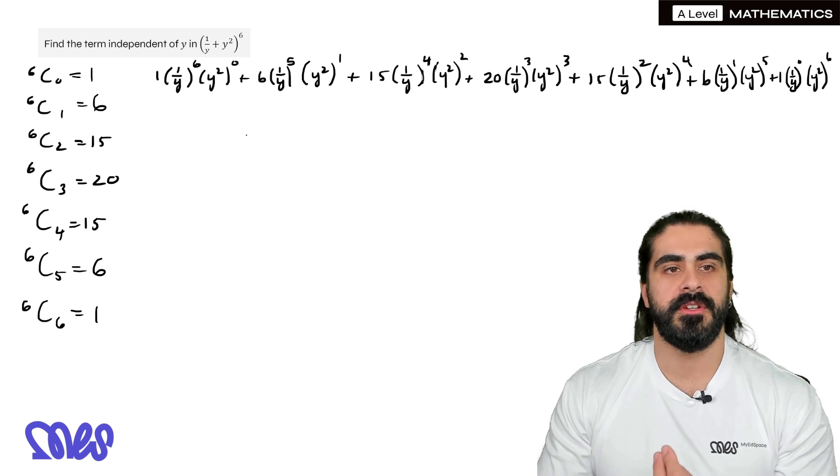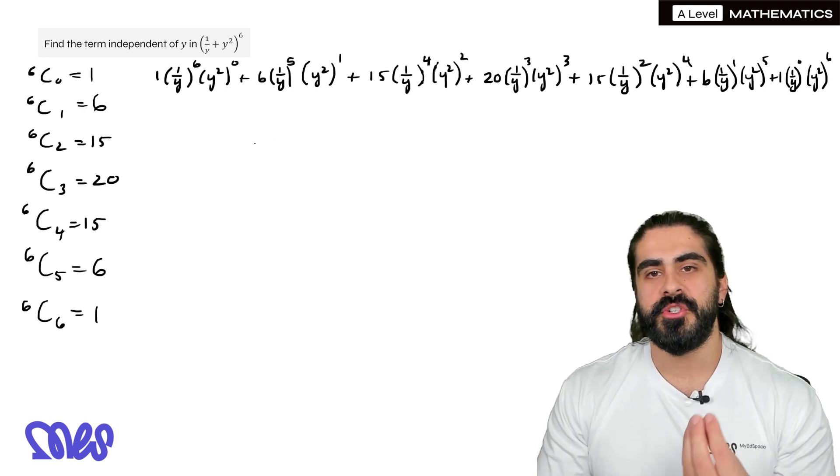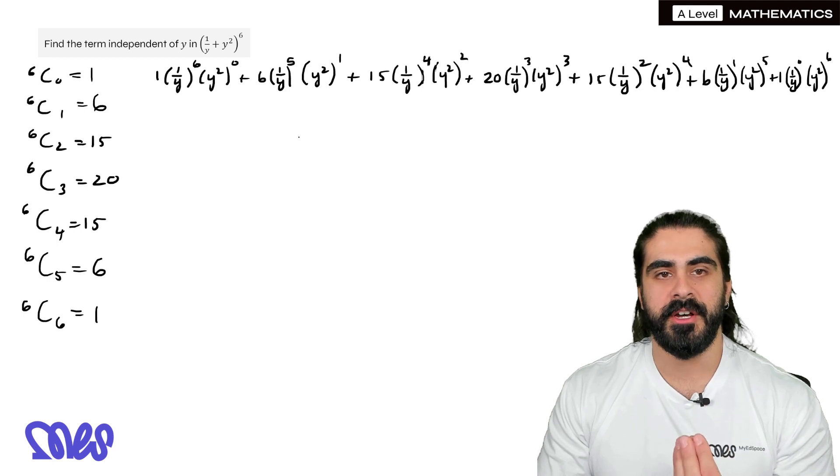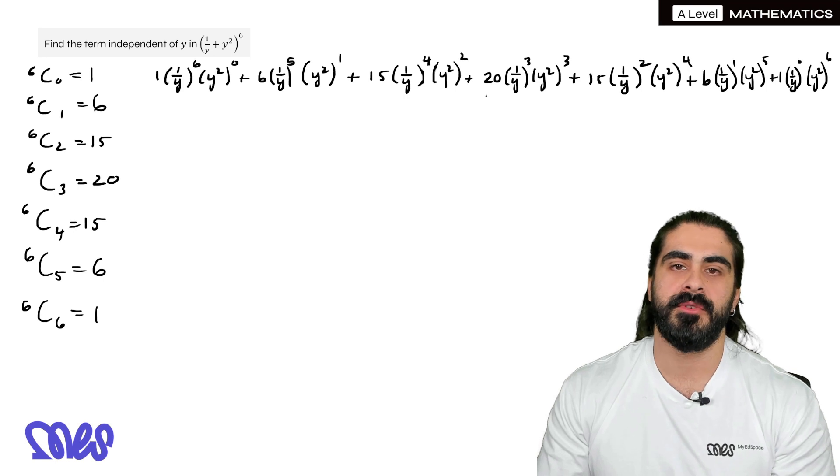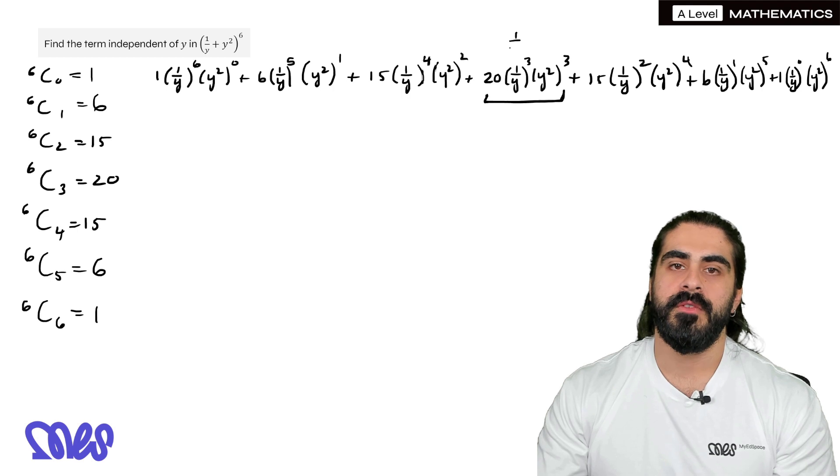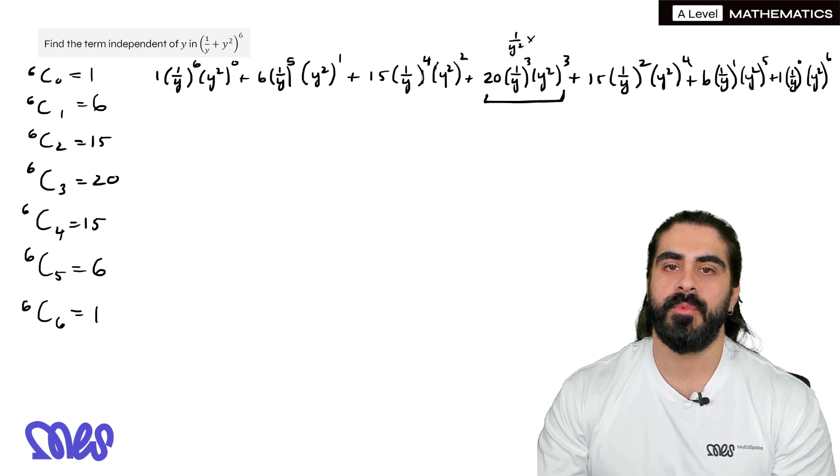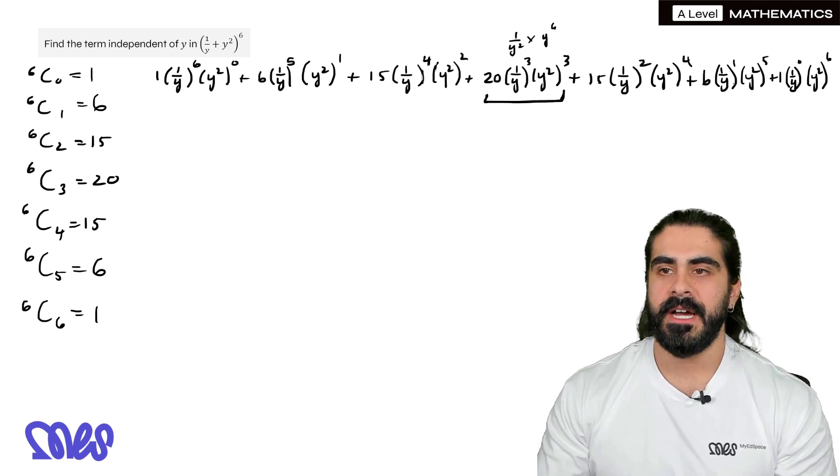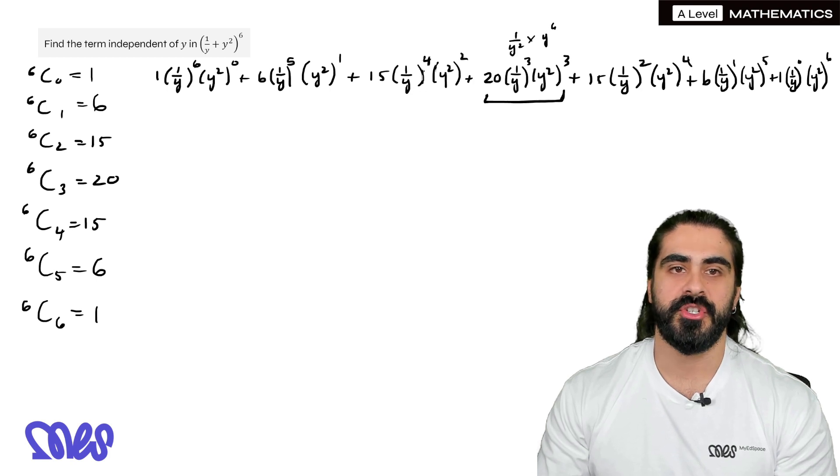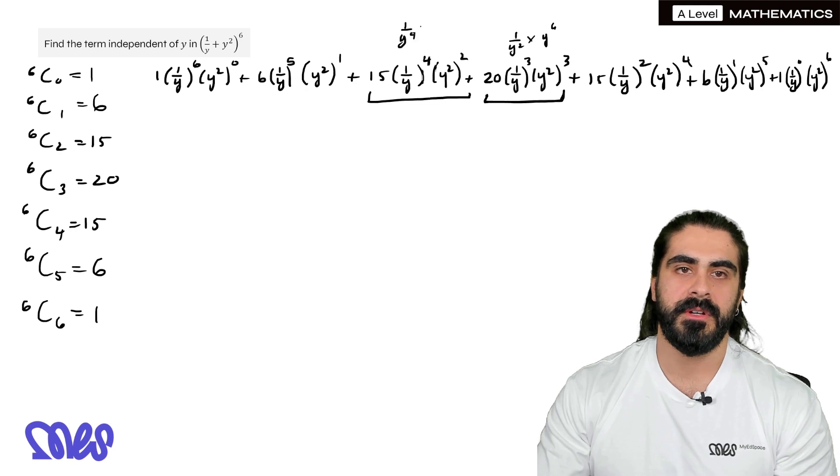So once we've done the full expansion, without having to simplify everything, you just need to look out for which terms would the y's cancel out. Now for example, say we take the middle term, usually students go straight to the middle term. If we were to simplify that, we get one over y cubed times y squared cubed, which we multiply them together. Now they would not cancel out. So you need to look along and think which ones would actually cancel. And you should notice that it's this term, because you'd have one over y to the power of four times y to the power of four, they would cancel.